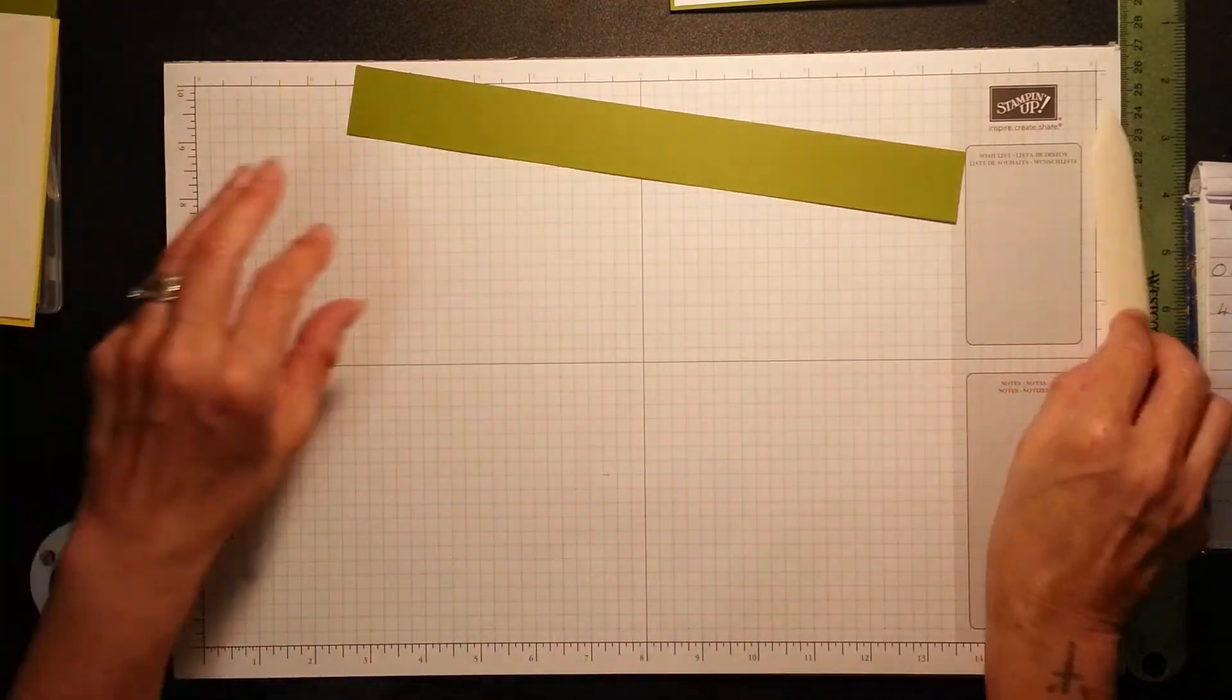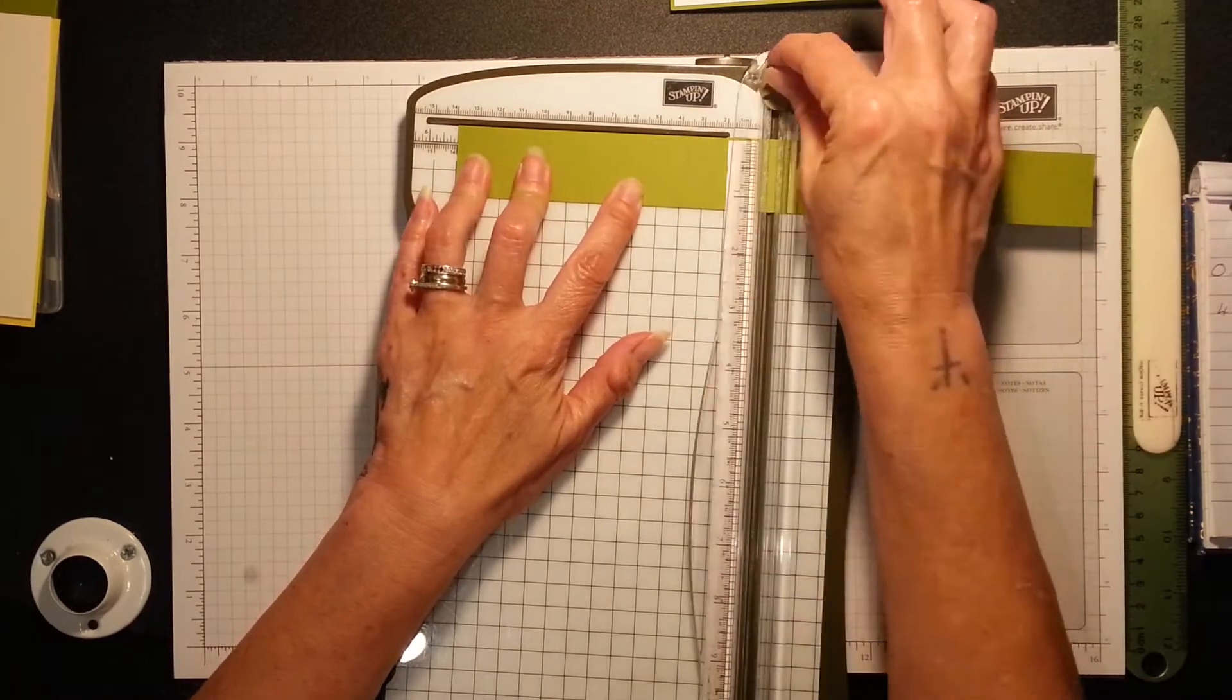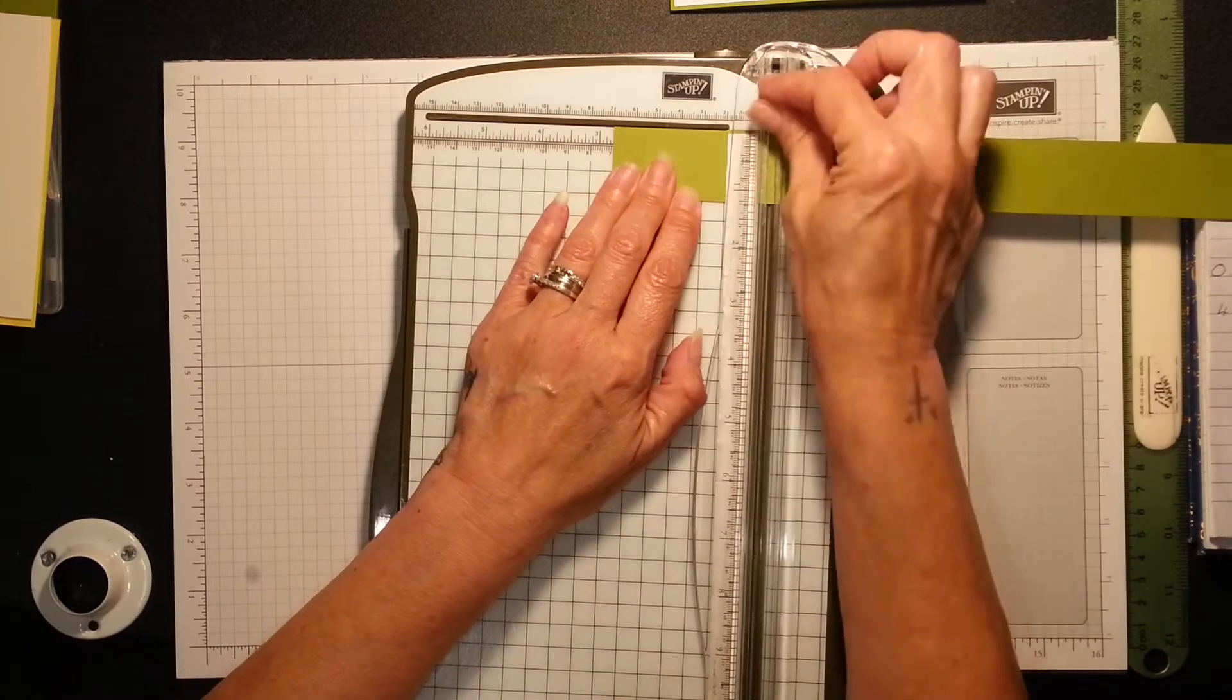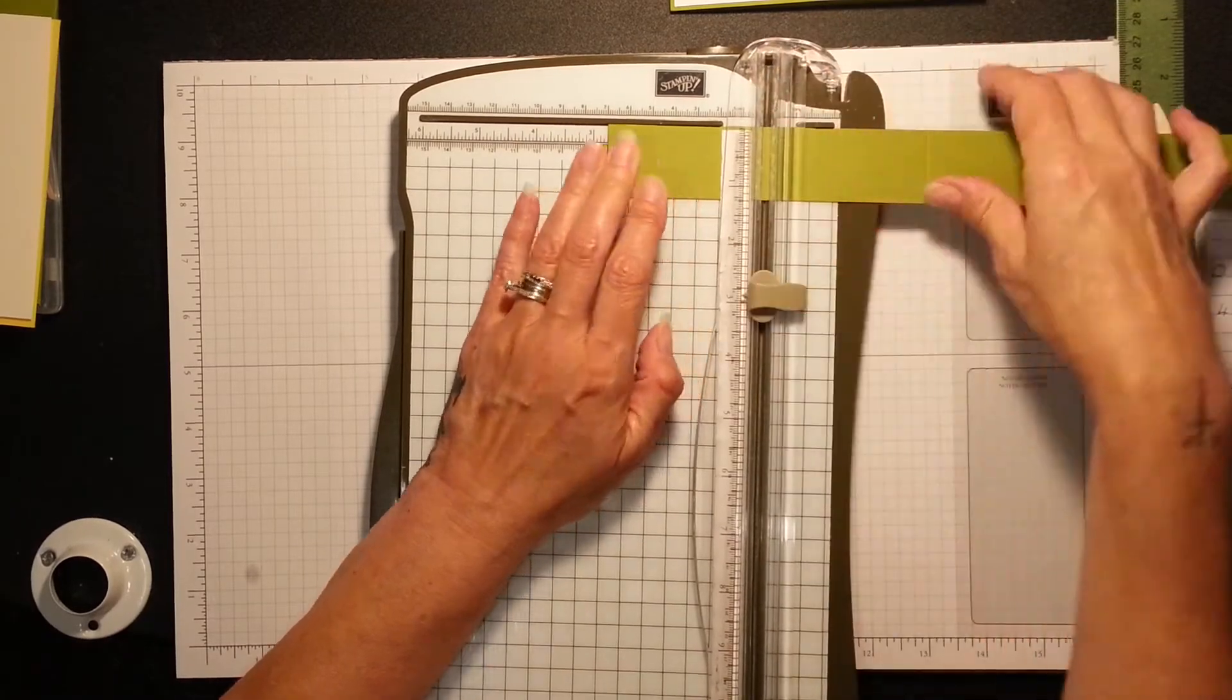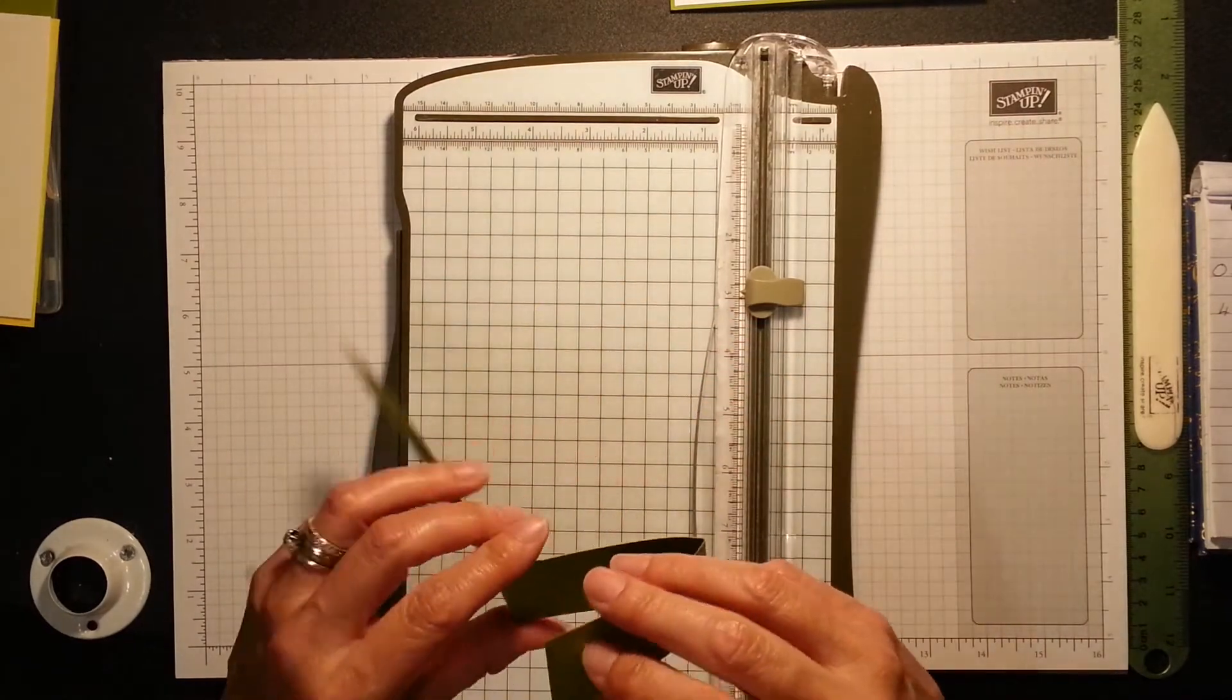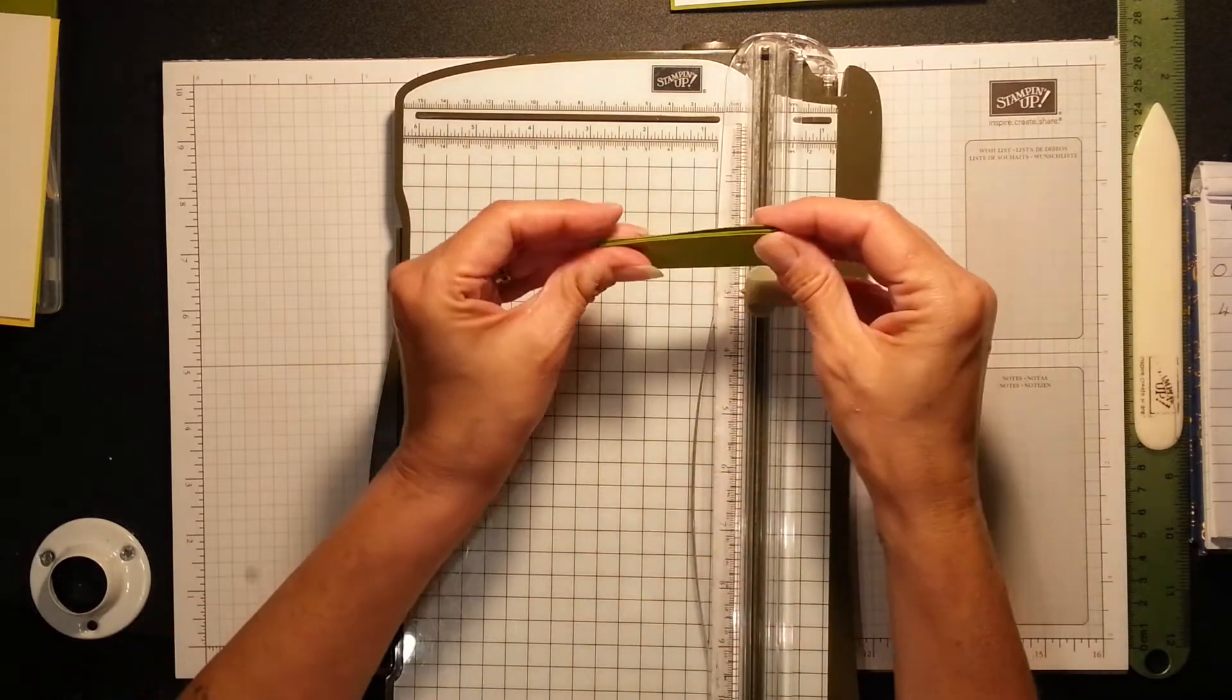I'm going to put this together in a minute. We're just going to score this now. It's so simple. You're going to score this at 5.5, 2.75, and then just flip it around and then another 2.75. What I'm going to do is mountain fold.